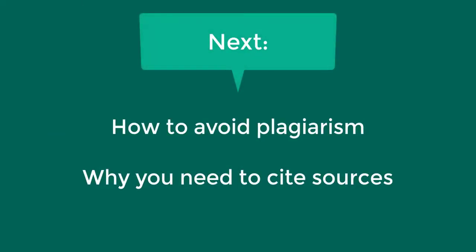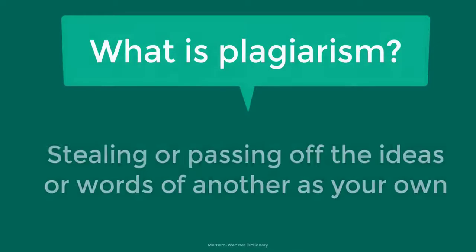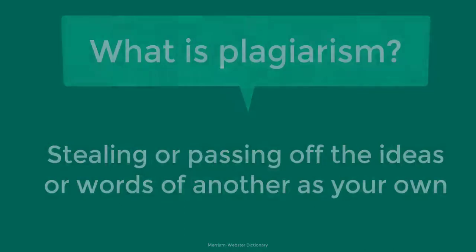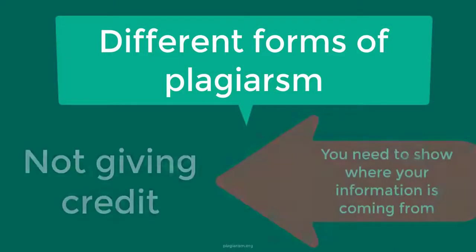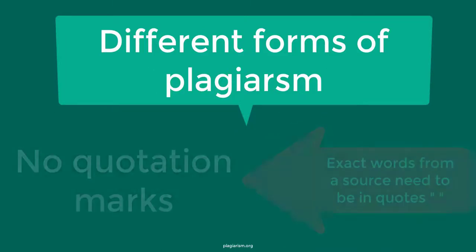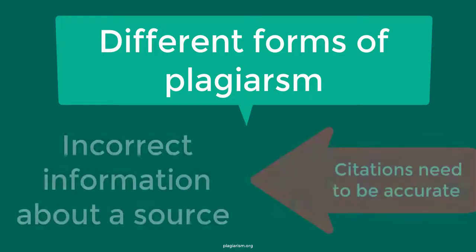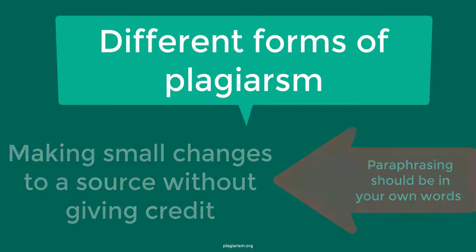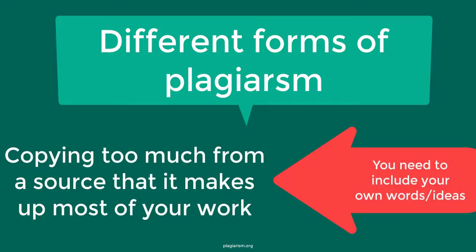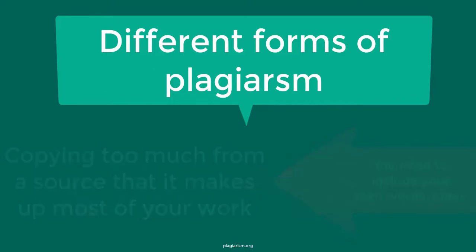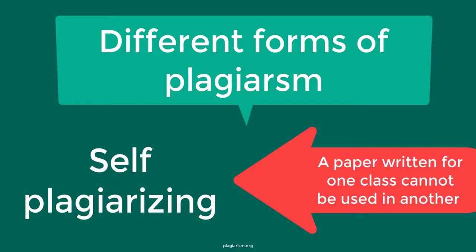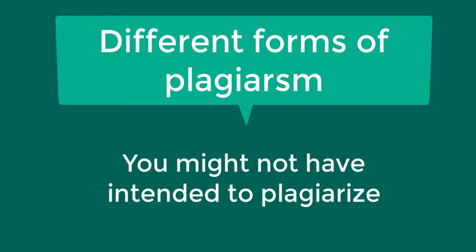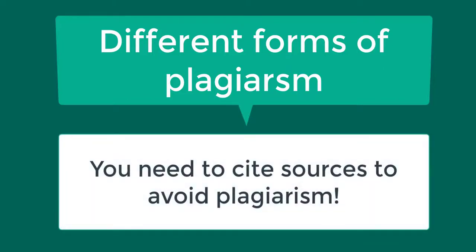Next, we're going to talk about citing sources — why it's important to cite and how to cite in the 7th edition of APA format. To plagiarize is to steal or pass off the ideas or words of another as your own. Plagiarism may occur in a number of ways: using words or ideas from a source without giving credit, failing to put a quotation in quotation marks, giving incorrect information about the source, changing words but copying the sentence structure without giving credit, copying so many words that it makes up the majority of your work, and self-plagiarizing. Failing to properly cite sources can also be considered plagiarism.